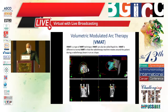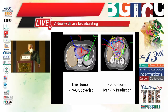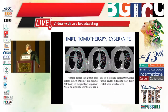This is volumetric modulated arc therapy (VMAT), also called RapidArc — a more advanced IMRT technique where the radiotherapy machine rotates around the patient during delivery in an arc shape, giving greater control of beam portals. For example, a liver lesion very close to the stomach: to avoid irradiating the stomach with complications like hemorrhagic gastritis, we can use VMAT to create non-uniform liver PTV irradiation with very good results.